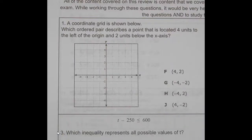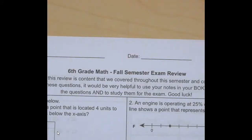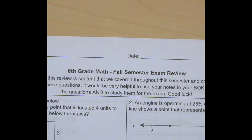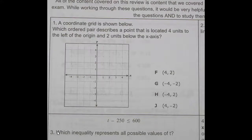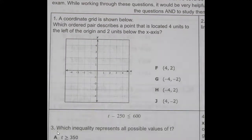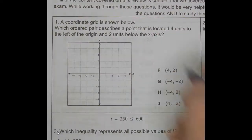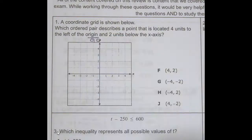This is your review for your fall semester exam. You should have been given one of these review packets this week. Number one: a coordinate grid is shown below. Which ordered pair describes the point that is located four units to the left of the origin and two units below the x-axis? The origin is (0,0).